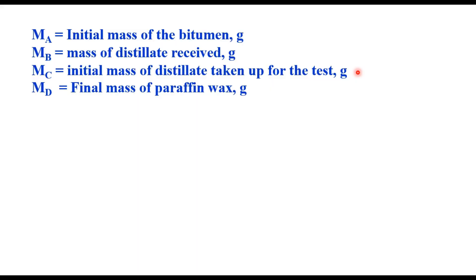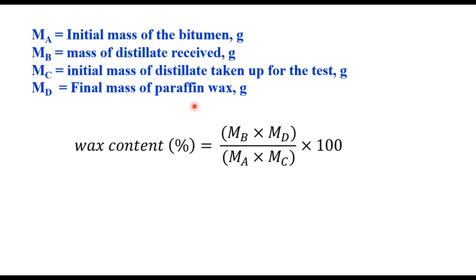You now have four masses: MA is the initial mass of bitumen taken (25 g), MB is the total mass of distillate received, MC is the initial mass of distillate taken for the test (2 to 4 g), and MD is the final mass of paraffin wax. The wax content is calculated as: (MB × MD) / (MA × MC) × 100. The test should be repeated, and if the values for both test portions do not differ by more than 0.3% by mass, determine the mean of the two values. Otherwise, carry out a third test and take the average of the two values closest to each other.